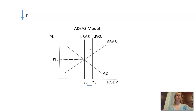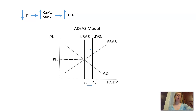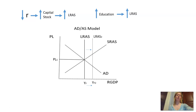In the scenario where you have a decrease in the real interest rate, in the short run, this will increase consumption (C) and investment (IG), causing an increase in AD, which causes an increase in price level and real GDP. Over time, the accumulation of capital causes an increase in capital stock. In the long run, an increase in capital stock causes an increase in the LRAs. Similarly, when you have an increase in education, this also causes an increase in the LRAs, and increasing the LRAs means we are showing economic growth.